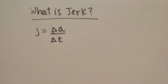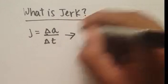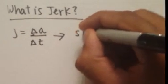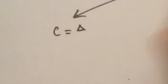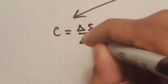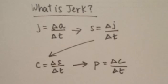Now we know that jerk is the change in acceleration over the change in time. But we can go further. The slope of jerk is snap, which is a change in jerk over a change in time. We can also get the slope of snap, which is crackle, the change in snap over a change in time. We can even take the slope of crackle, which gives us pop, the change in crackle over a change in time. In short, from jerk we hit snap, crackle, and then pop.